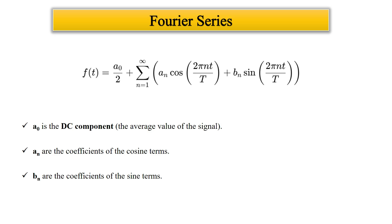To understand the Fourier series, let me ask you a simple question: can we represent any periodic signal, like a square wave, as a combination of sines and cosines? The answer is yes, and that's the beauty of Fourier series. Basically, the Fourier series allows us to represent a periodic function as an infinite sum of sines and cosines.